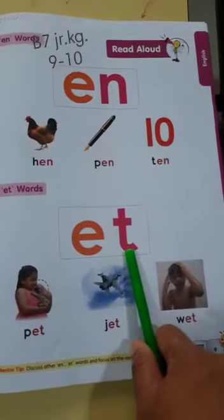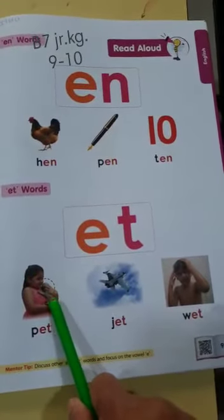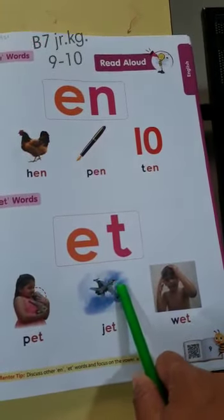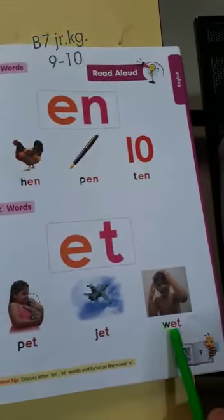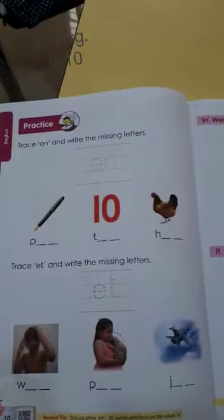And here, et words. Et. P, et, pet. This pet. J, et, jet. The jet aeroplane. This jet. W, et, wet. Getting wet.